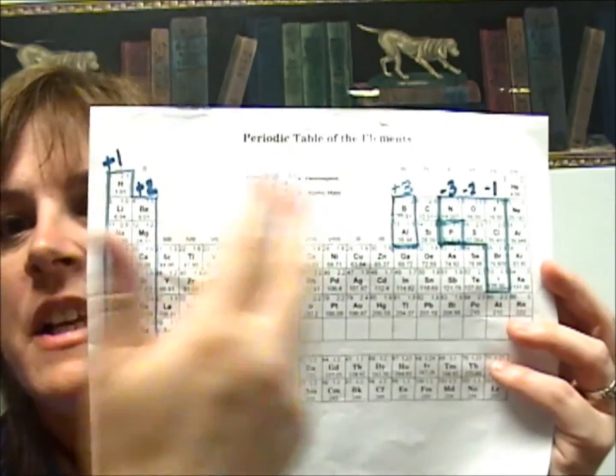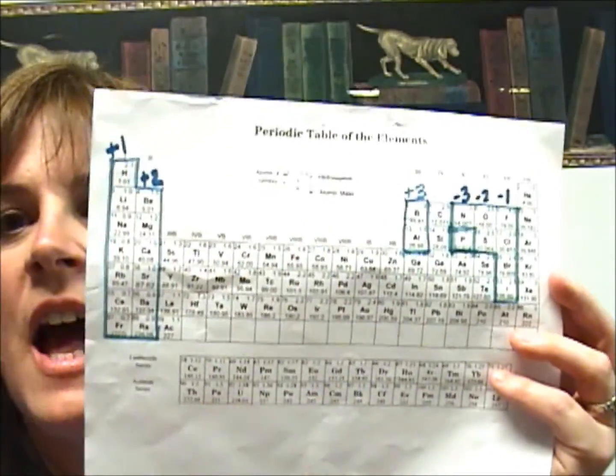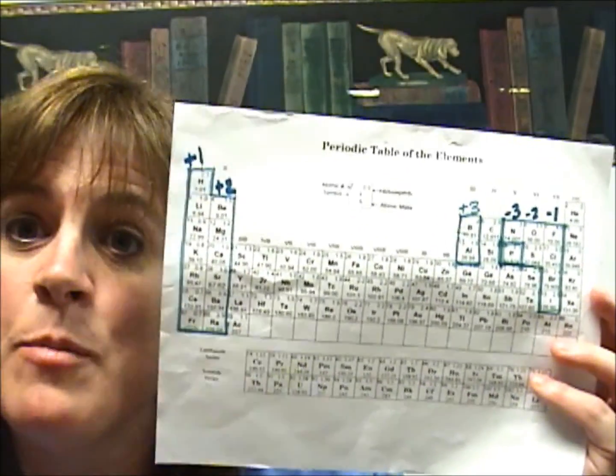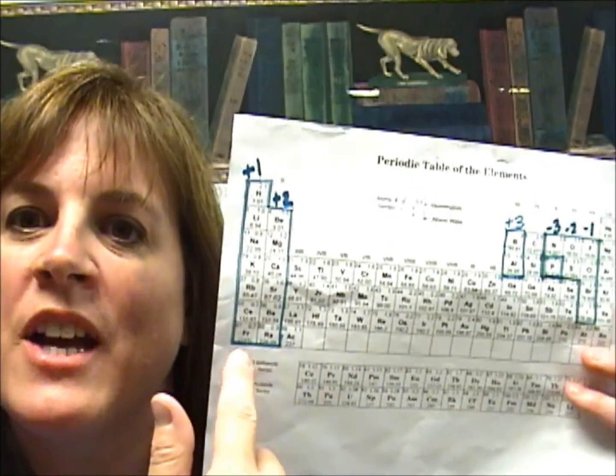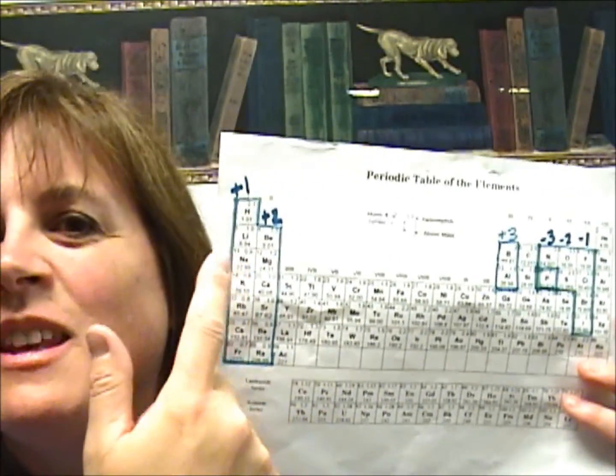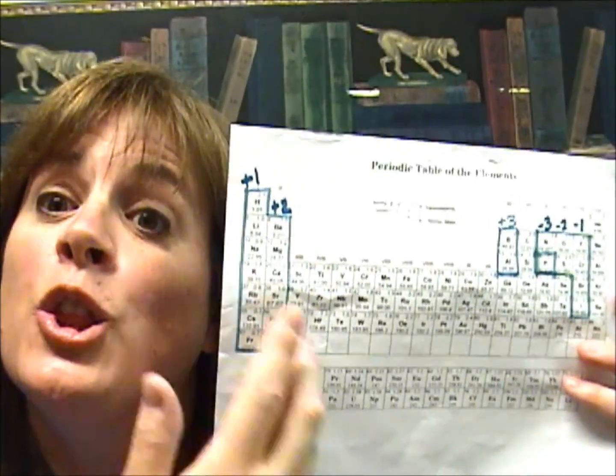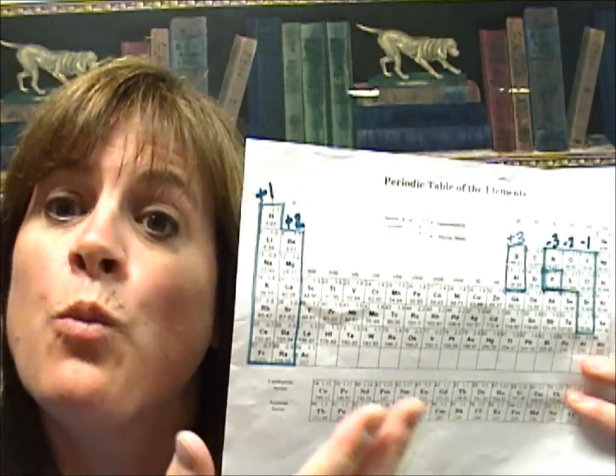To figure that out, first we've got to go back to talking about charges. Remember in the charge video, I said some atoms will lose electrons, some gain electrons, and there's actually a pattern to that. So get out your periodic table. The columns have some significance in terms of charge. Everything in the very first column — group 1, like hydrogen, lithium, and sodium — they all lose one electron and gain a charge of positive 1.